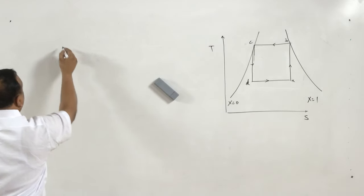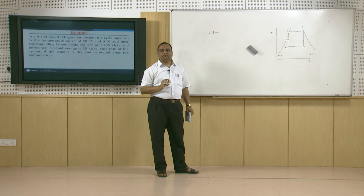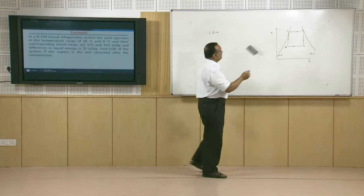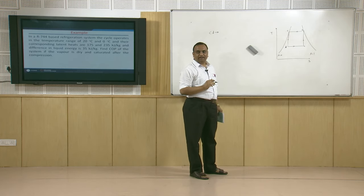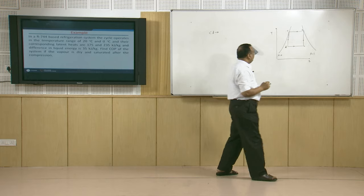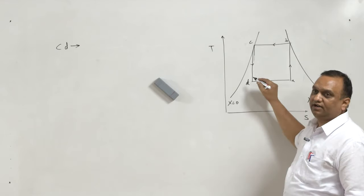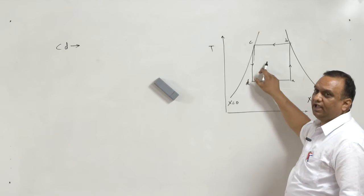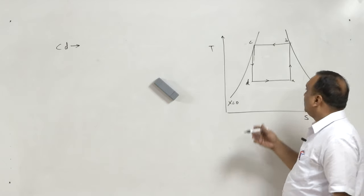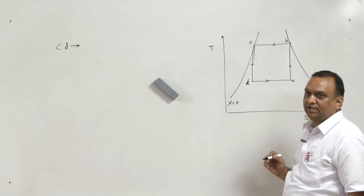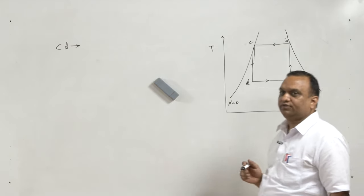Now, process C to D represents the isentropic expansion of the liquid available at C. As I said earlier, the provision of an expander or turbine is not advisable here because the work output is very small, and it may be the case that the work output is barely sufficient to overcome the friction losses during this process. Also, expanders and turbines are costly items, so it may not justify the cost of the system.